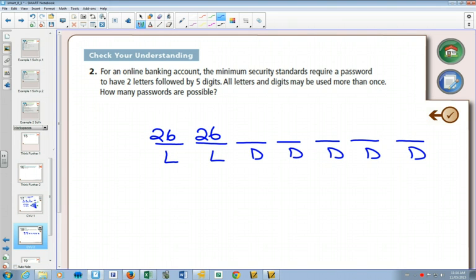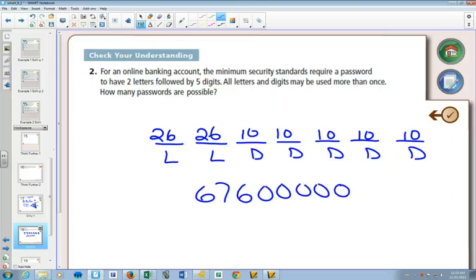And digits? 10, right? You have to include zero, so it'd be 10s all the way along here. And then you have to multiply that out, something like that, right?